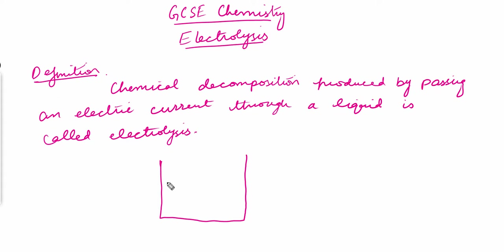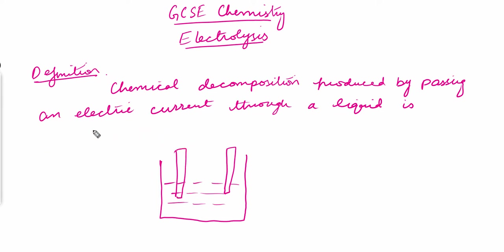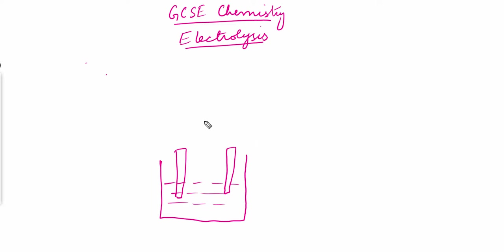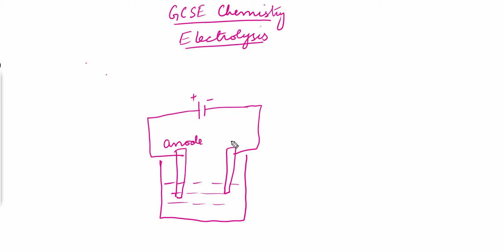In electrolysis we have a beaker containing the liquid. We also have two electrodes — rods used to conduct electricity. These electrodes are dipped in the liquid and connected to a battery. The electrode connected to the positive terminal of the battery is called the anode, and the electrode connected to the negative terminal is called the cathode. The liquid in which the electrodes are dipped is called the electrolyte.